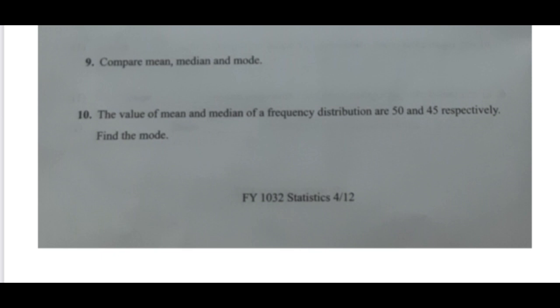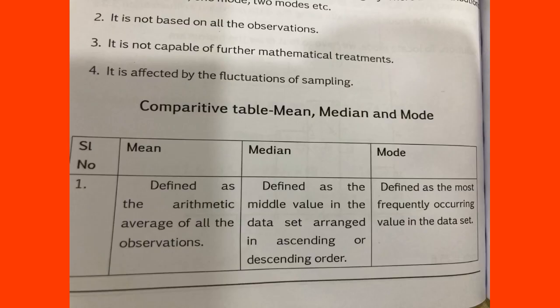If you have an example, compare mean, median, and mode. That's why we learn the averages — what is mean, what is median, what is mode. Let's look at the comparative table. The mean is defined as the arithmetic average of all the observations. The median is defined as the middle value in the dataset arranged in ascending order. The mode can be defined as the most frequently occurring value in the dataset.